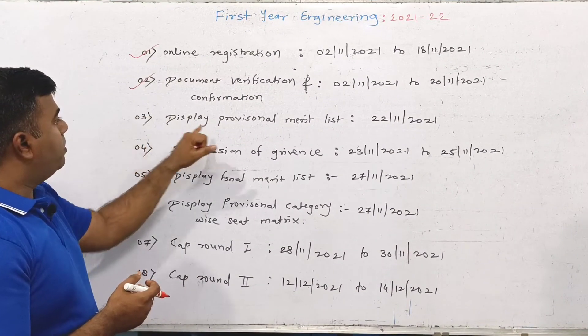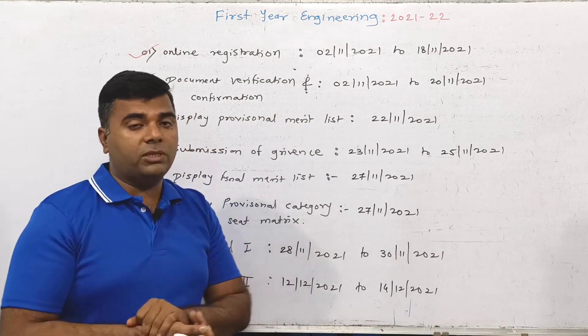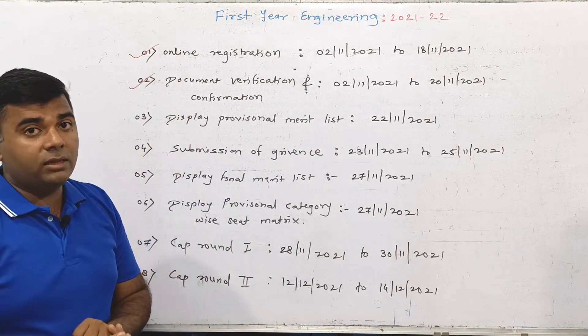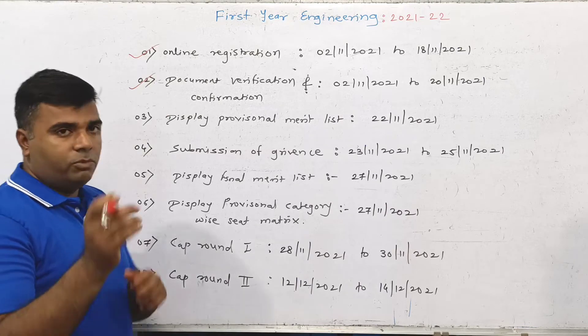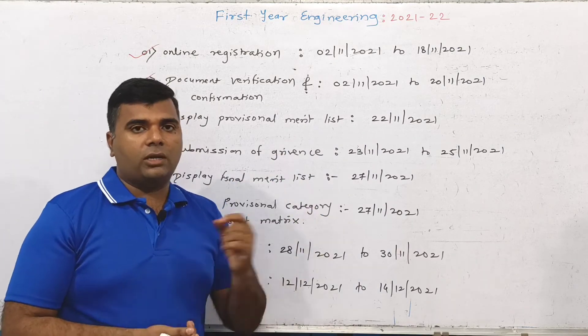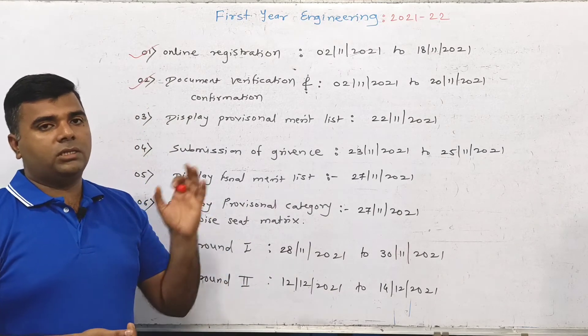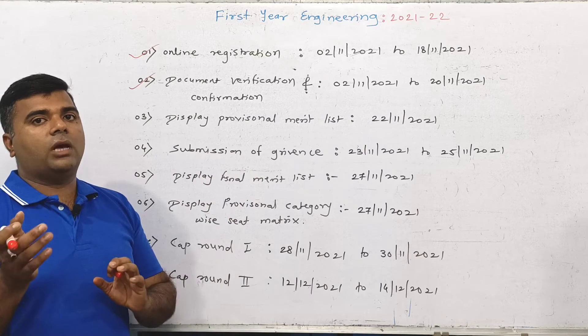Next is the display of the provisional merit list. You can confirm the form and pay fees online. If you are a general category student, you need to pay 800 rupees. For other category students like SC, ST, OBC, and NT, the fee is 600 rupees.